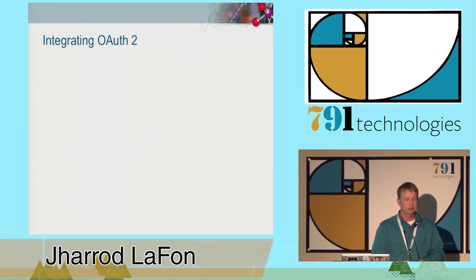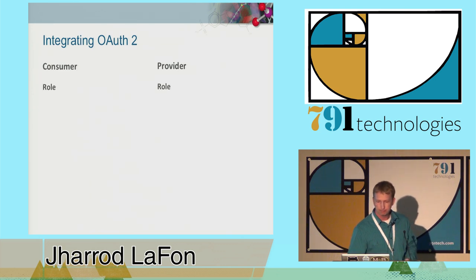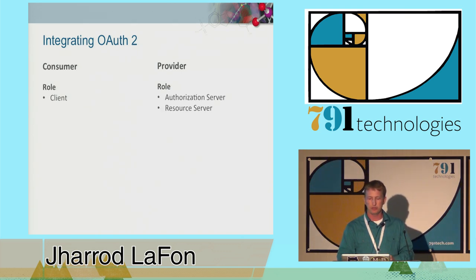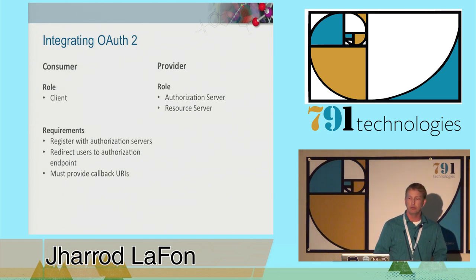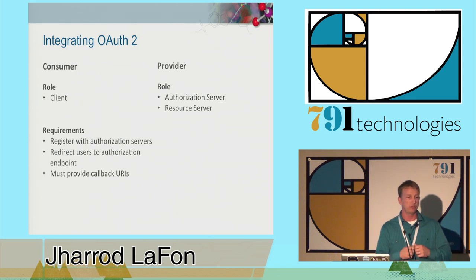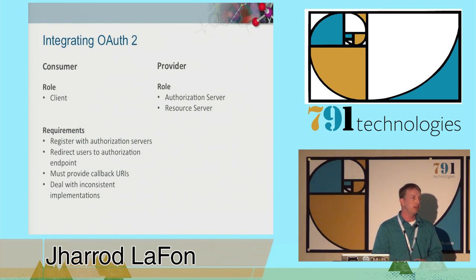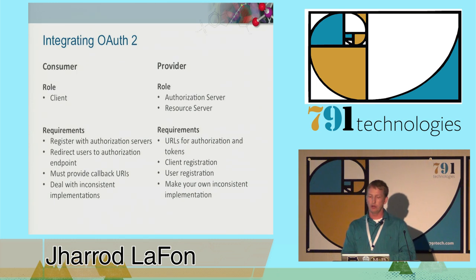Now that we know a little bit about how OAuth 2 works, how can we use it in our Django app? There are two broad overarching ways: you can either make your app a consumer of OAuth or a provider. For a consumer, it means you're fulfilling the role of client in the framework. For a provider, you're fulfilling the roles of authorization and resource servers. For the client, you've got to be registered with any authorization server you want to use, redirect users to those servers when you need to access their data, and provide callback URIs so the authorization server knows where to send the user after they've approved access. You also get to deal with inconsistent implementations, of which there are many.